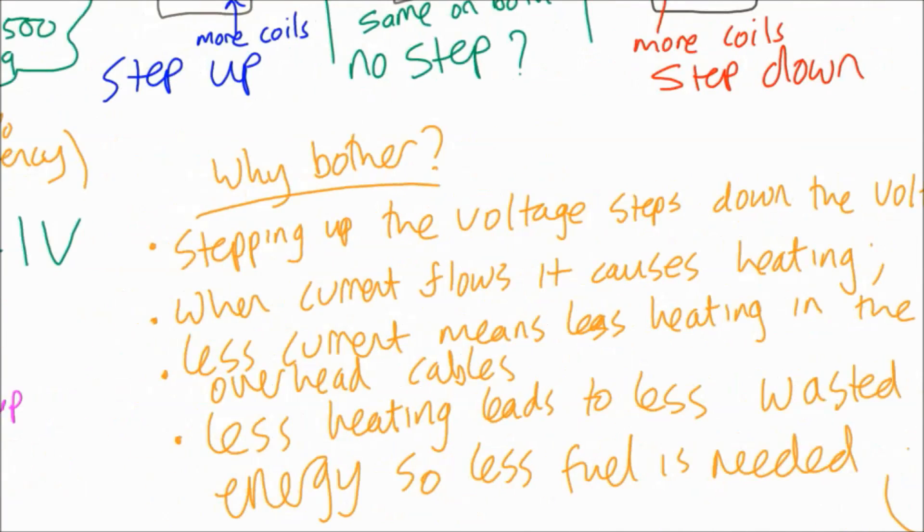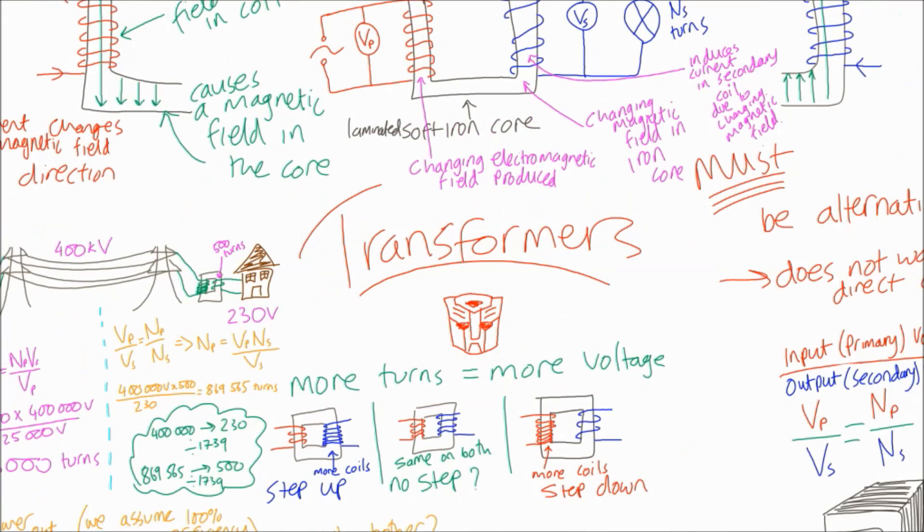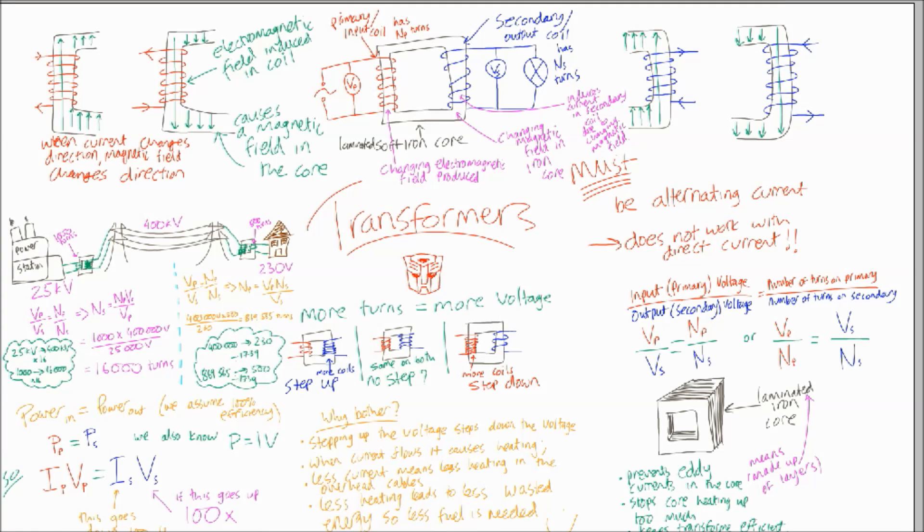That's a really quick look at the transformers topic. Remember, you can always solve transformer questions using ratios and then work out the equation afterward. Remember, if it's stepping up or stepping down, the coil with the more turns on is going to have more voltage across it. Find some past papers, practice these. And if you've got any questions about it, ask a question in the comments below. Thank you very much.